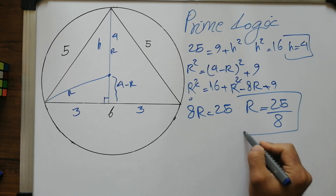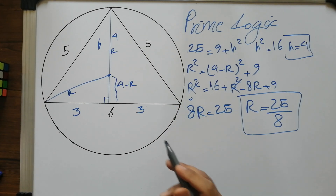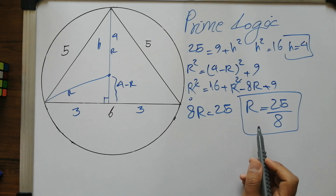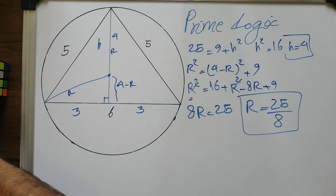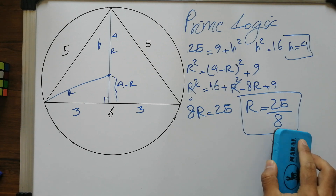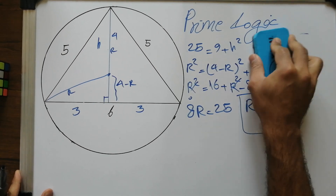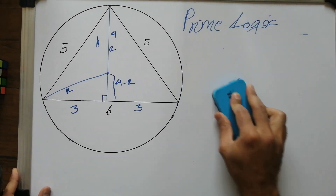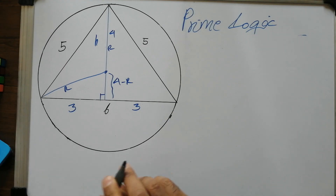So that's the value of r using pure elementary geometry and the Pythagorean theorem — r = 25/8. That's our first method.